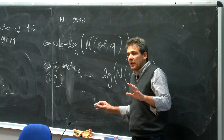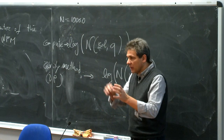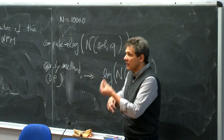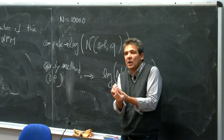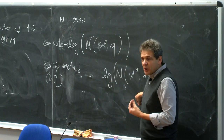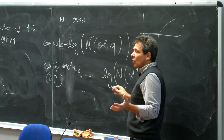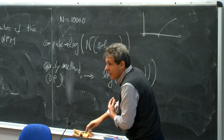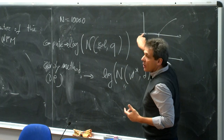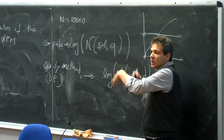In error-correcting codes, from a code word (ground state) you ask how many other code words exist at a given distance — important because nearby code words prevent error correction. In that setting you want a gap before seeing other solutions. Here we want the complementary phenomenon: we want to immediately find solutions nearby. The two models are somehow complementary — you cannot use a neural network as an error-correcting code and you cannot use an error-correcting code for storing patterns; the parity machine is closely related to an error-correcting code and doesn't work for learning.